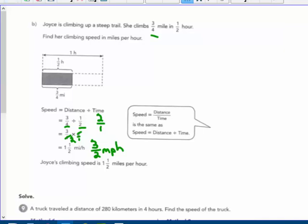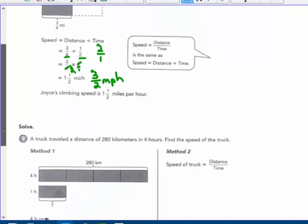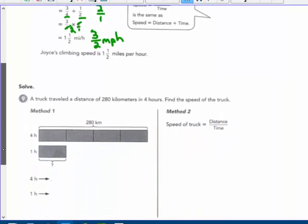Three halves miles per hour would be the same answer. Joyce is climbing at one and a half miles per hour as she's going up a steep trail. That's pretty good pace still.